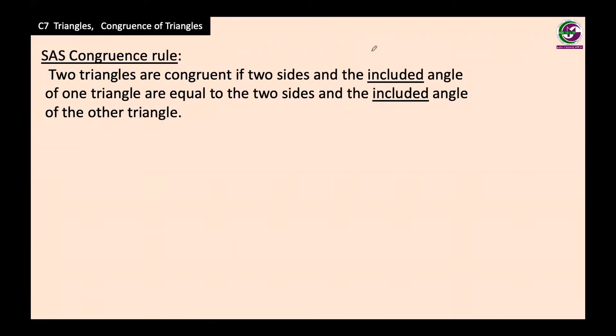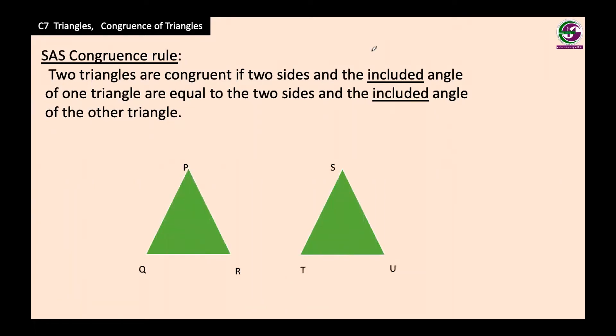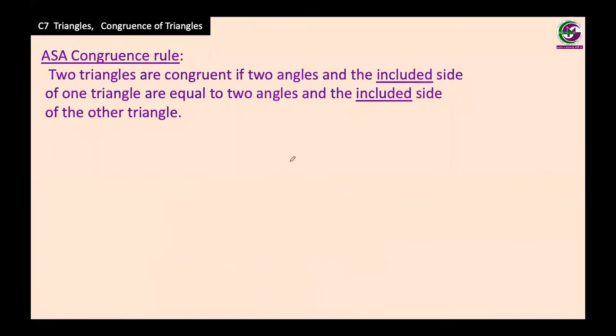Dear students, hope all are safe and fine. Welcome back to the chapter on Triangles. In the previous period, we studied the congruence criteria for SAS and ASA. Let us have a quick review. In two triangles, if two sides are given equal and the included angle is equal, then we say that these two triangles are congruent under SAS criteria.